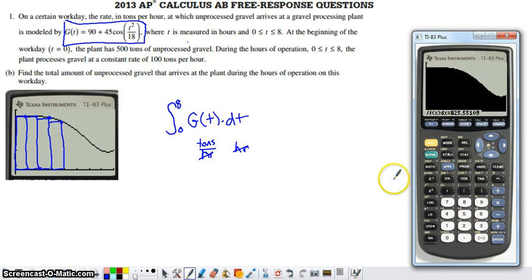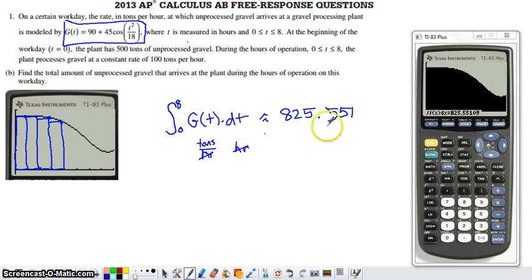And if we go ahead and copy this answer down, we get an answer that's approximately 825. And we want to take this to three digits of accuracy, so that would be 0.551. And rounding or truncating is going to leave us with that 0.551 value. So why is it so hard for me to write a 5 right now? 5, 5, 1. This would be measured in tons, like we said a few minutes ago. That's how many tons of gravel arrive at the processing plant over the course of the workday.